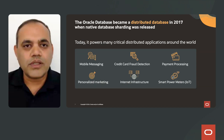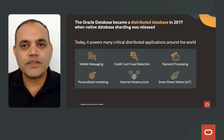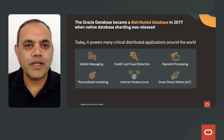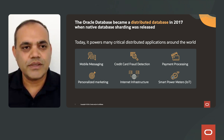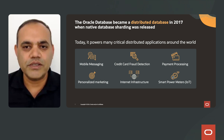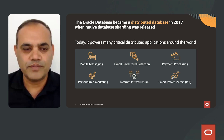The Oracle database became a distributed database in 2017 when native database sharding was released. Today, it powers many critical distributed applications around the world.